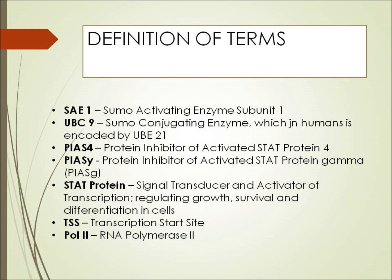Definition of terms: SAE-1 stands for SUMO-activating enzyme subunit 1. UBC H9 is the SUMO-conjugating enzyme, which in humans is encoded by UBE2I. PAS-4, protein inhibitor of activated STAT protein gamma, sometimes also called PISG. STAT protein is the signal transducer and activator of transcription, which regulates growth and survival in differentiating cells.